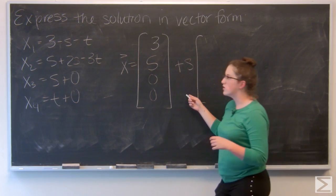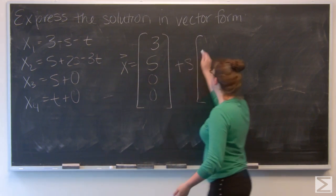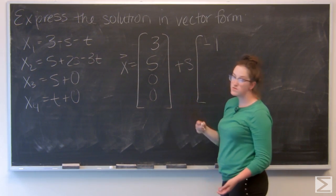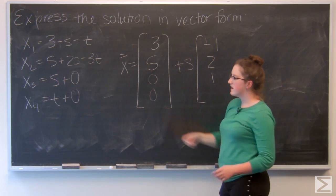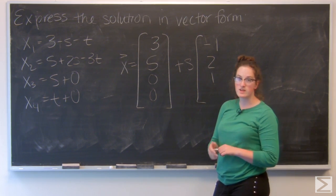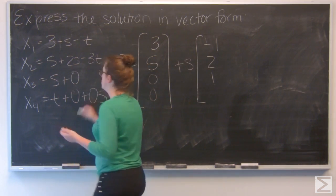The second vector is going to be the coefficients of s. So in x1, that's negative 1. And x2, that's 2. x3, 1. And x4 doesn't have an s term in it, so I can think about that as like 0s. So that gives me a 0.